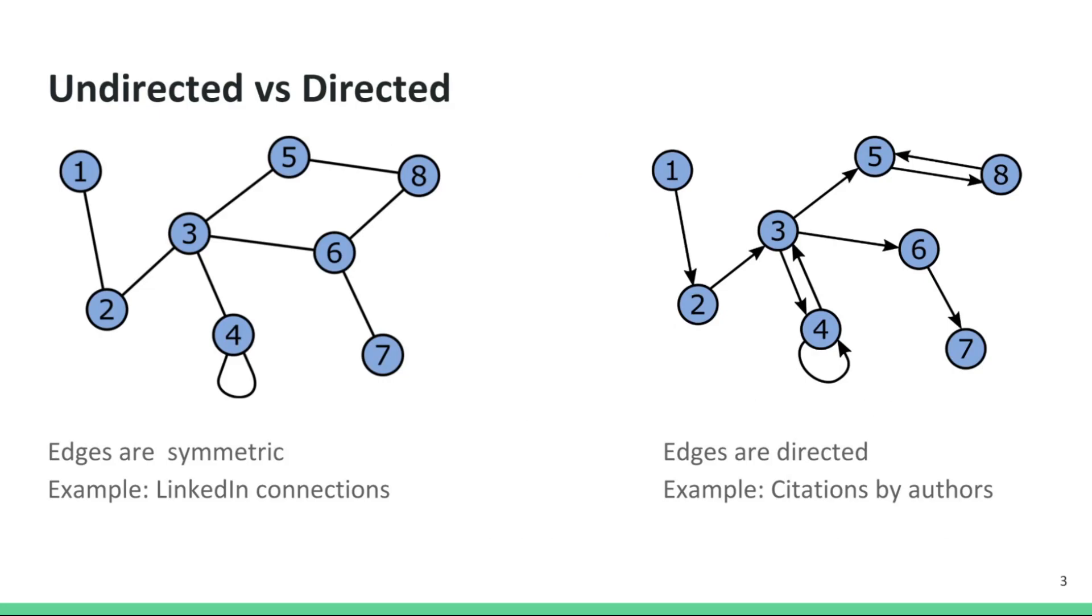Graphs may be either directed or undirected. In a directed graph, as the name implies, edges have a direction. For example, an edge going from node 3 to node 4 is distinct from an edge going from node 4 to node 3. No such distinction is made in an undirected graph.